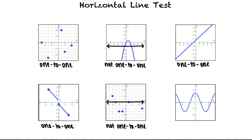For the last graph, we could also draw a horizontal line at y equals 0 that intersects the graph more than once. So this function is not 1 to 1 either.